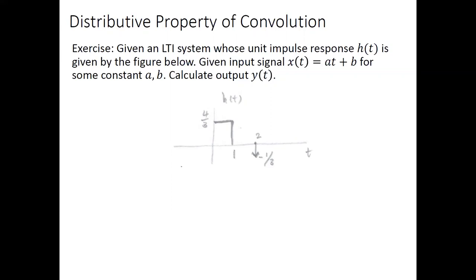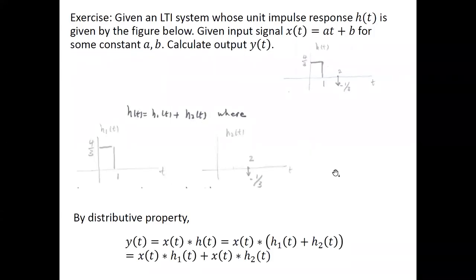Because h has a given structure, it is natural to think we can split h as h1 plus h2. So h1 is a platform with height 4/3, and h2 is an impulse with value minus 1/3. For this shifted version of an impulse, it can also take a negative value — in that case the arrow points downward to indicate negative. Because of the distributive property, x convolved with h equals x convolved with h1 plus x convolved with h2.